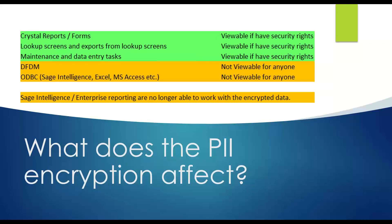Another big one — maybe the biggest one where you can't see the data — is anywhere that requires an ODBC connection. So if you're using Excel, Microsoft Access, or even Sage Intelligence, which is the intended report writer for Sage 100, you will not be able to access the data regardless. It is encrypted; you cannot get to it from the outside world. That basically means if you had Sage Intelligence reports on a version before 2018 using payroll employee information or banking information, those reports simply wouldn't work if you were to upgrade your Sage and bring in the PII.